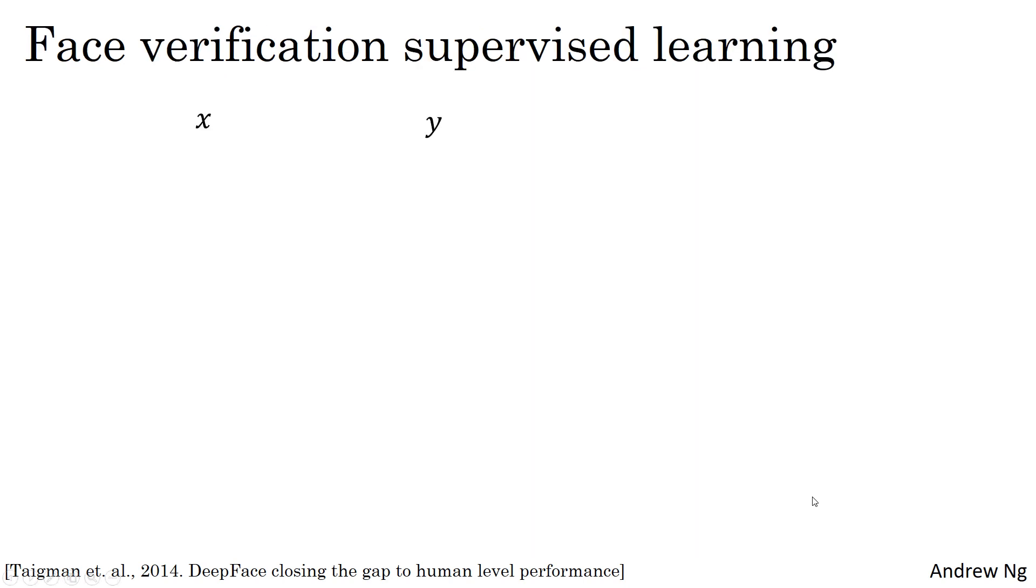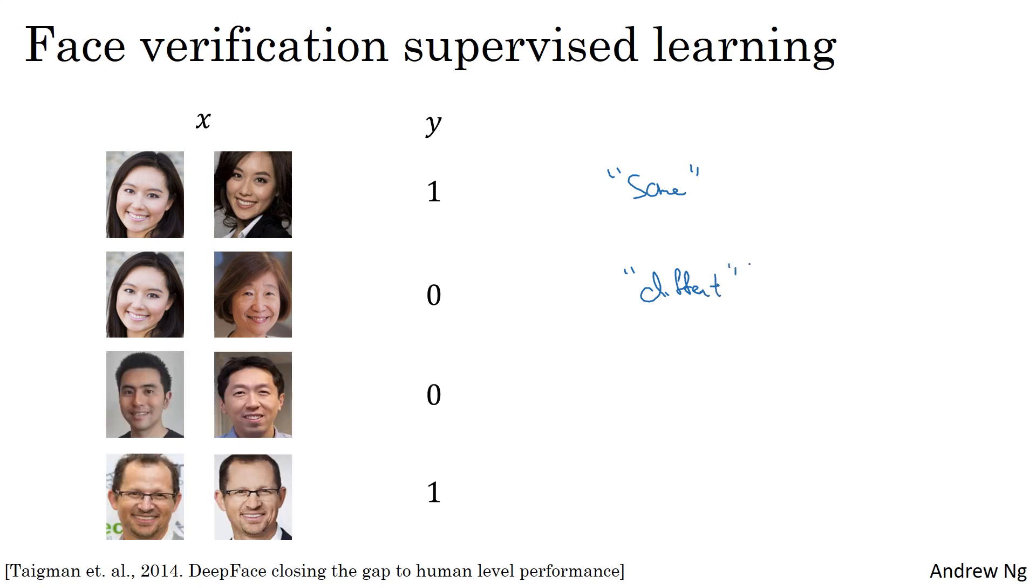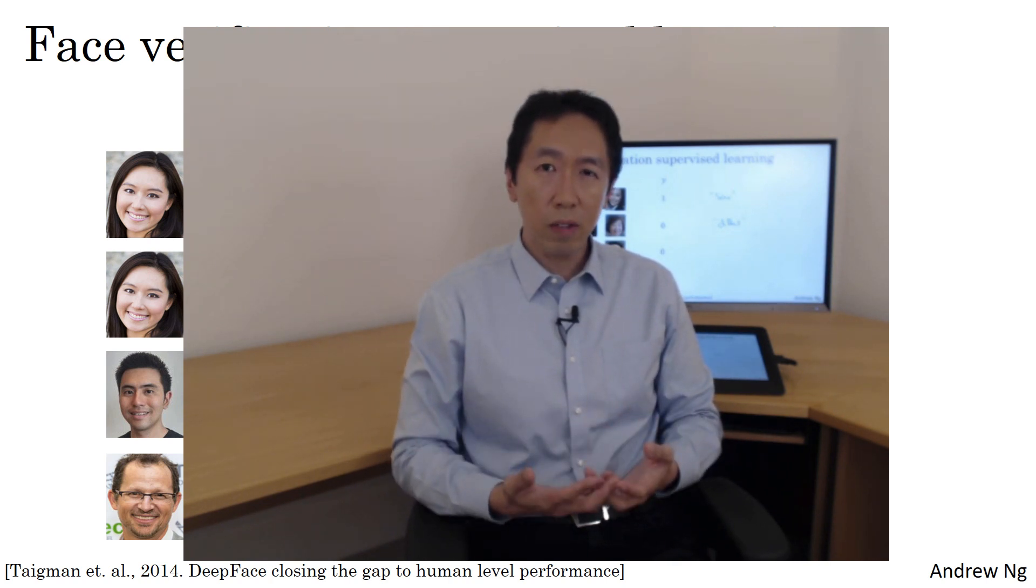To wrap up, to treat face verification as supervised learning, you create a training set of pairs of images where the target label is one when these are pictures of the same person, and zero when these are pictures of different persons, and you use different pairs to train the Siamese network using back propagation. This version of treating face verification and by extension face recognition as a binary classification problem works quite well. I hope that you now know what it would take to train your own face verification or face recognition system, one that can do one-shot learning.